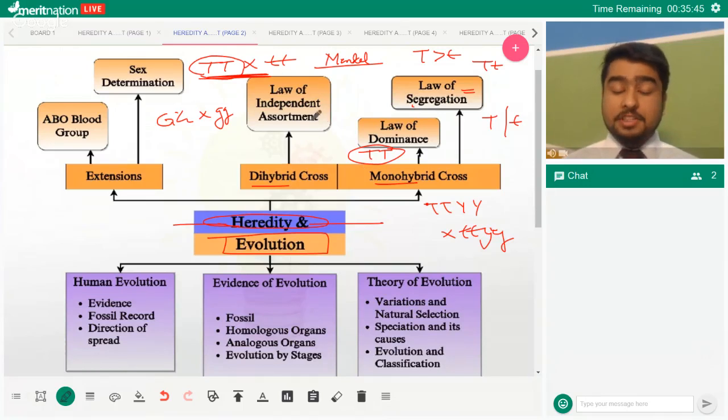Now dihybrid cross, basically where you are following two characters. Two characters led to discovery of the law of independent assortment. That means when I'm examining the height and the color of the seed, I should understand that height is not dependent upon the color of the seed. Their heredities are not entangled. They are inherited independent of each other.